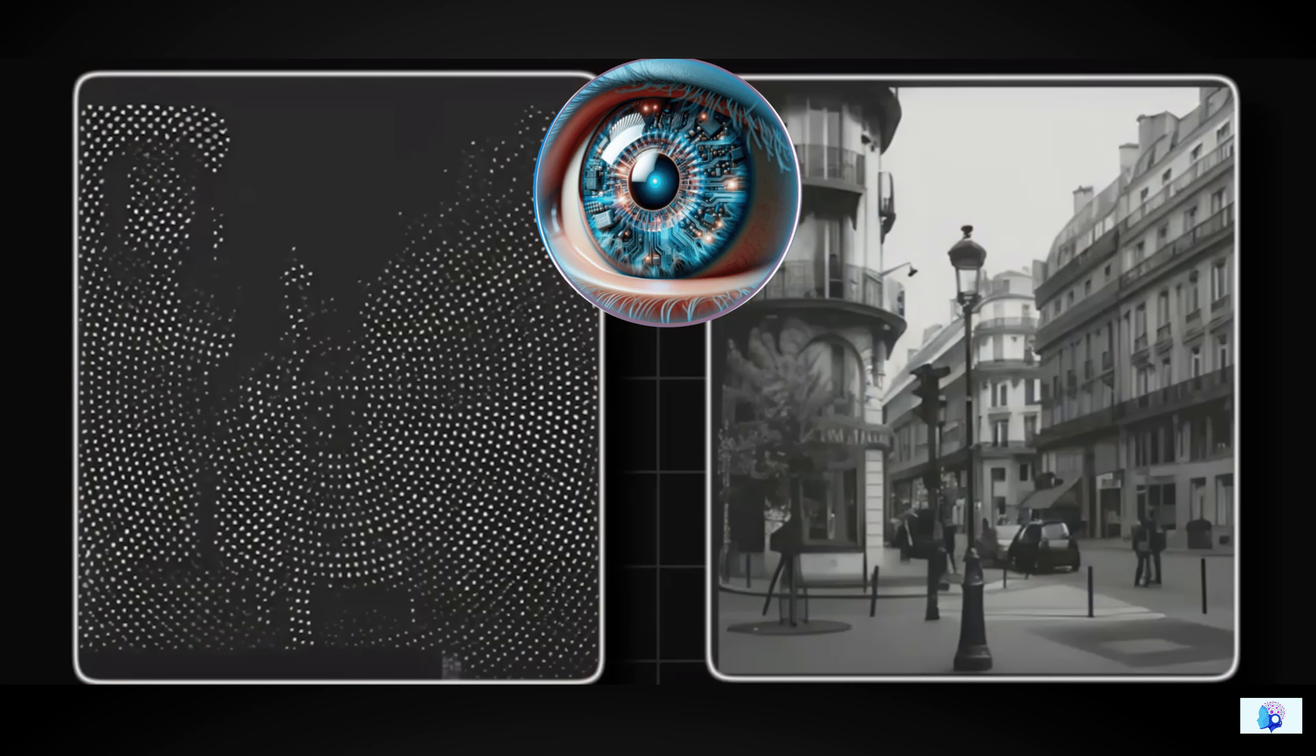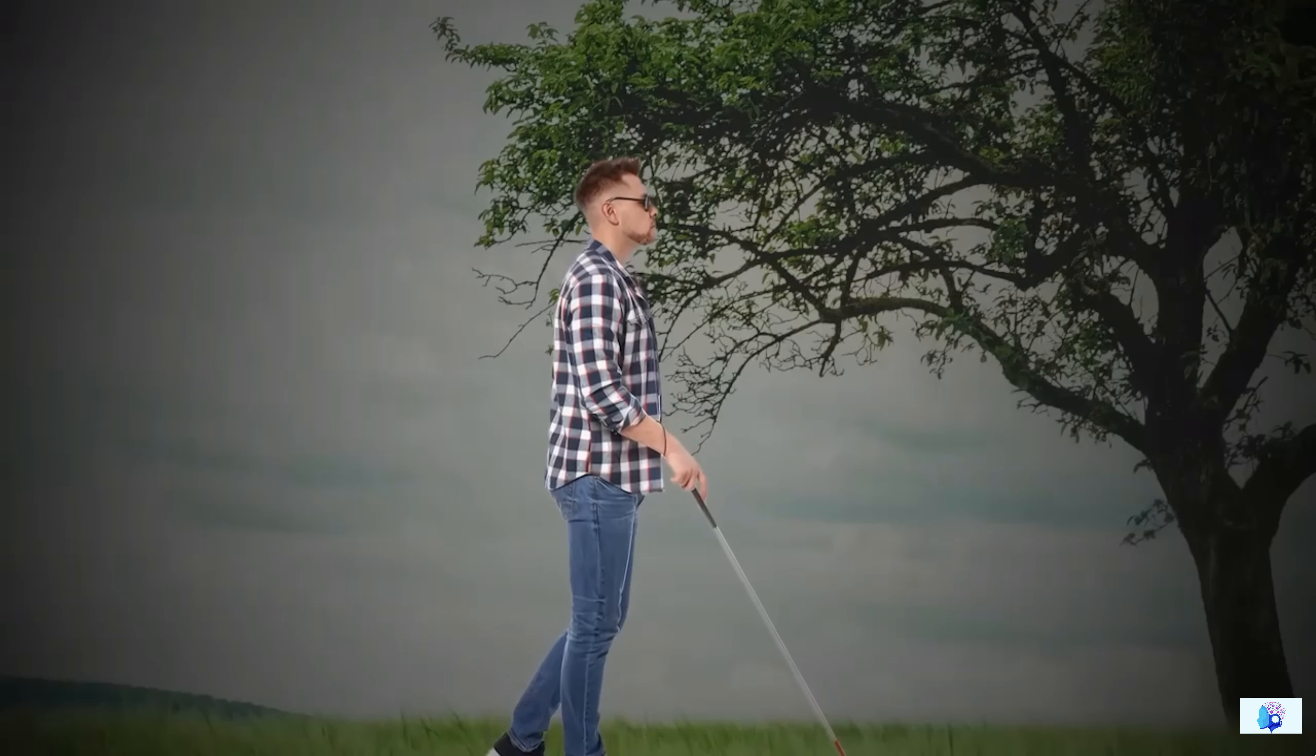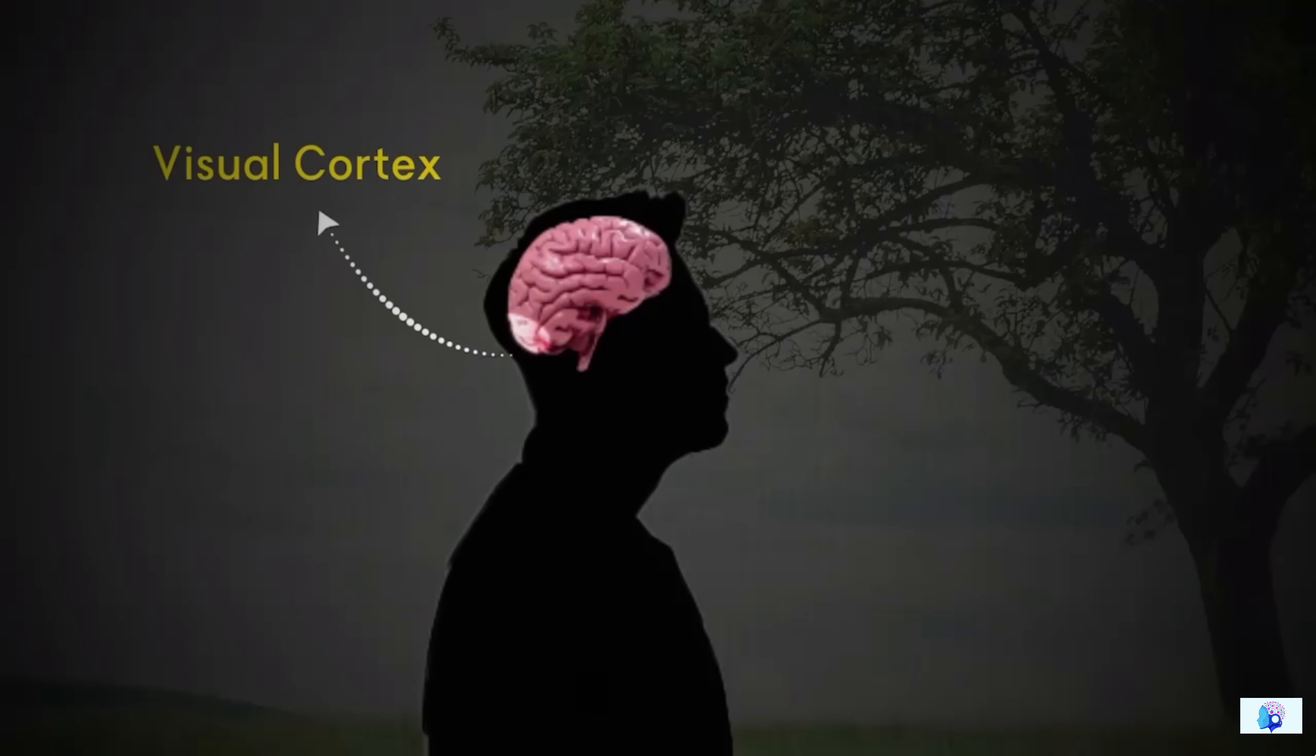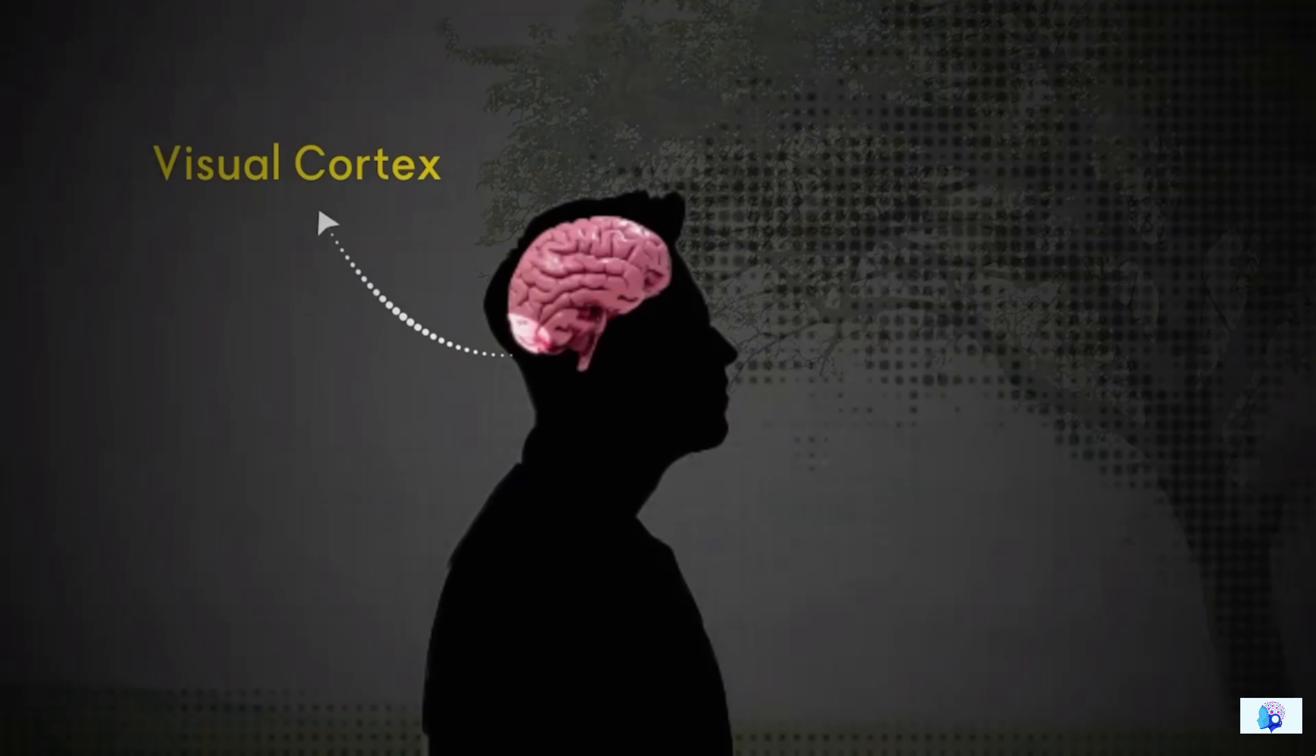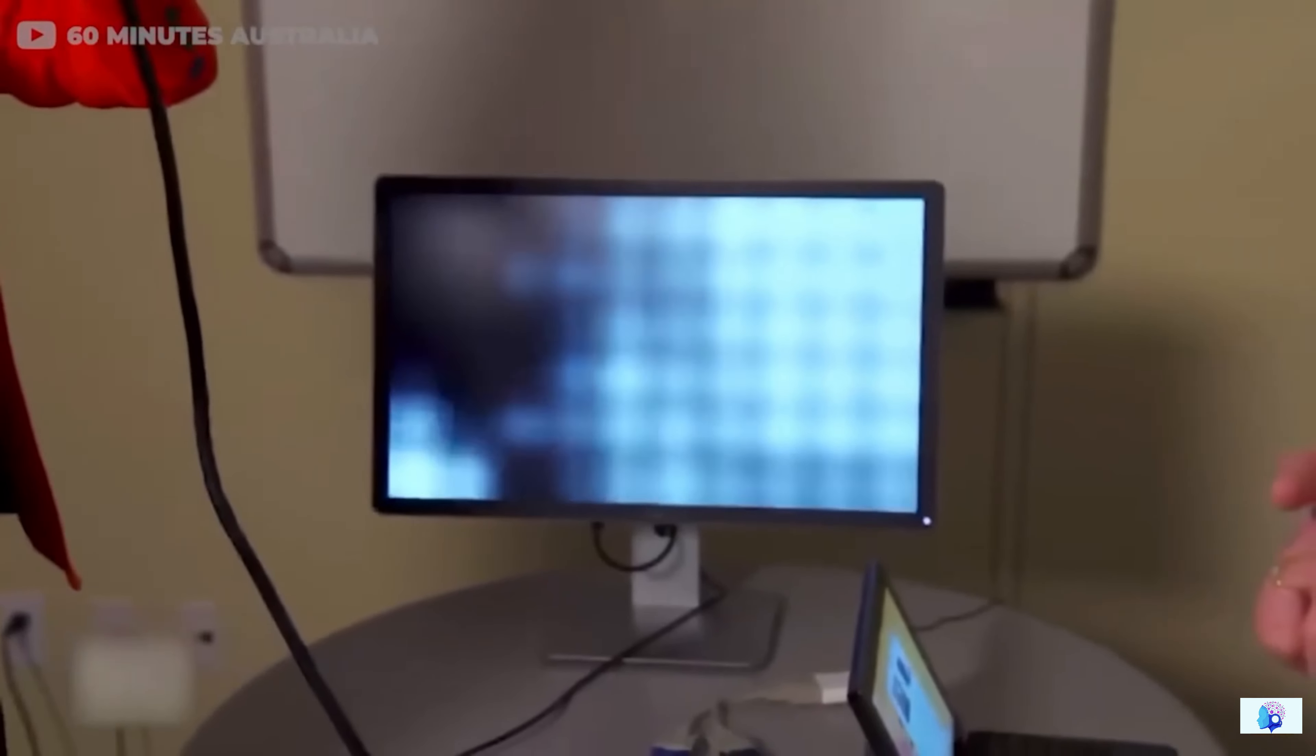Now, you might argue that this image seems primitive. However, consider this. For someone who has been blind since childhood, there was no concept of light in their mind. Thus, starting with such dotted images provides a foundation. Over time, when these dotted images begin to form a reference point in their mind, then we can introduce more detailed images in their mind. If this solution proves successful, then with the help of this technology, we will be able to fix other disabilities also.